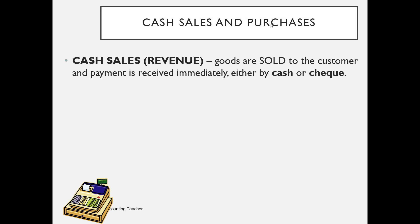So, cash sales and purchases. Cash sales, or sales revenue, are goods that are sold to the customer and payment is received immediately, either by cash or by check. The term 'cash' doesn't necessarily mean paid for in cash — it just means payment has been received instantly from the customer with no credit allowed. The distinction we're making is between cash sales and purchases versus credit sales and purchases, but this session will concentrate on those paid for immediately.